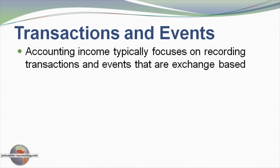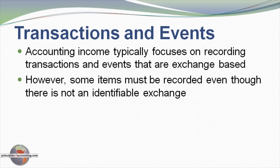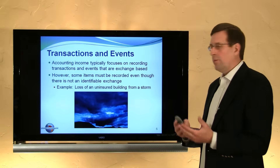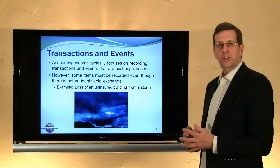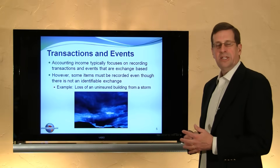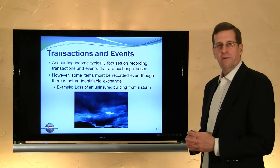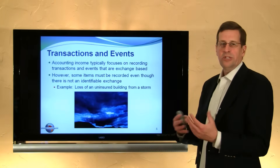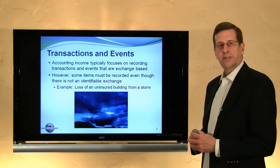Accounting income typically focuses on recording transactions and events that are exchange-based. There are some items, however, that are recorded even though there is not an identifiable exchange transaction, such as adjusting a particular asset to fair value. For example, if we have a loss due to a storm that diminishes the value of a facility, we would write that off even though there is not a particular exchange-based transaction.